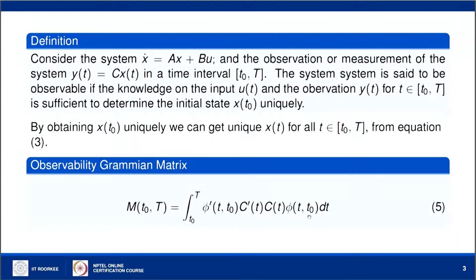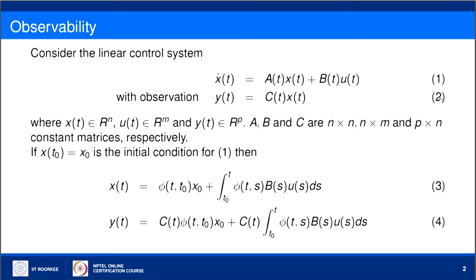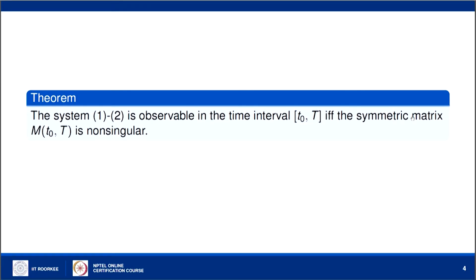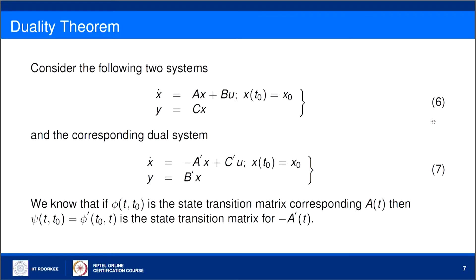So this system is not observable. Mathematically, the theorem states: let M(t0, T) be the observability Gramian matrix given by expression 5. The system (equations 1 and 2) is observable if and only if the matrix M is nonsingular. This result is valid for both time-varying and time-invariant systems. A simplified condition can be obtained for time-invariant (autonomous) systems.